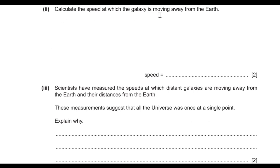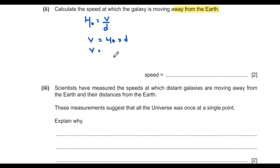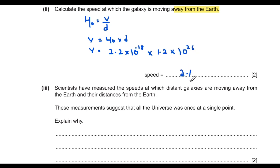Calculate the speed at which the galaxy is moving away from Earth. Using the Hubble constant formula: v = H₀ × d = (2.2 × 10⁻¹⁸) × (1.2 × 10²⁶) = 2.6 × 10⁸ metres per second.